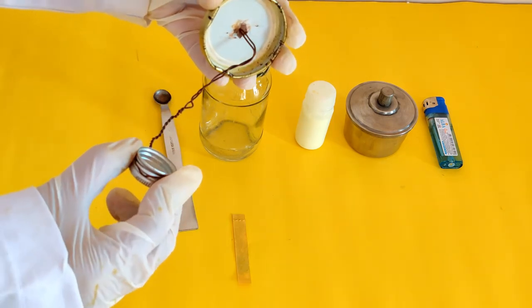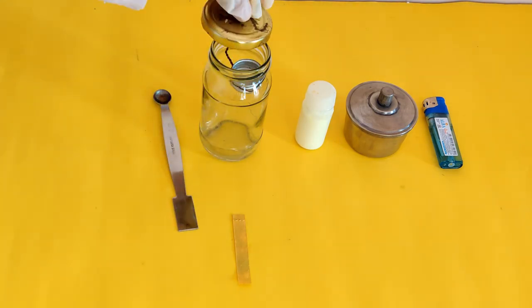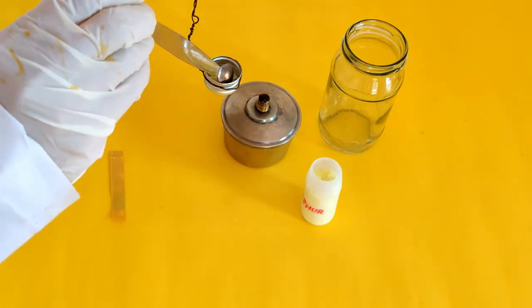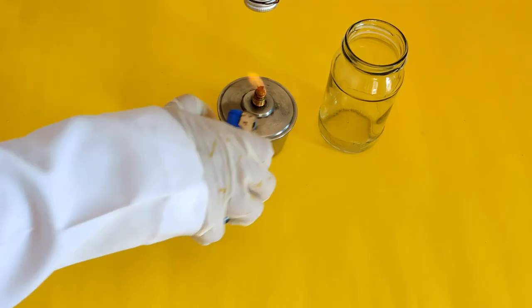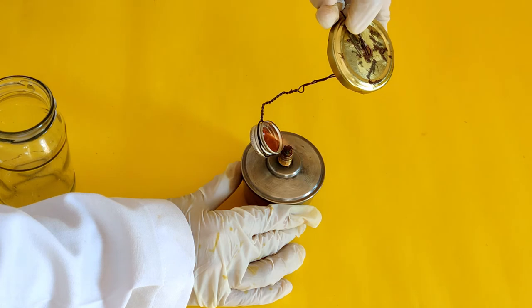Insert one end of the wire into the hole in the lid of the glass jar, so that you can lower the cap into the jar and close the lid. Now, add a spatula full of sulfur to the cap. Light the spirit lamp and hold the cap above it while exposing the sulfur to the flame.